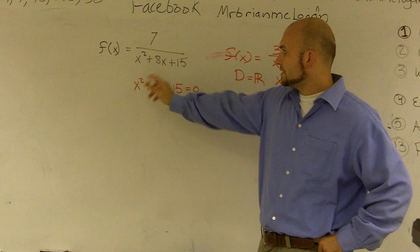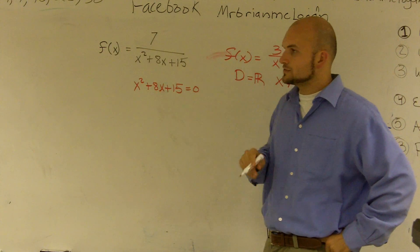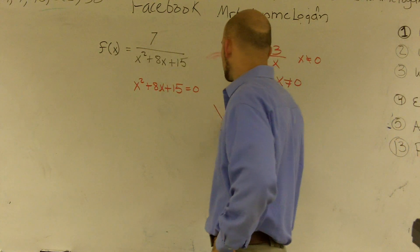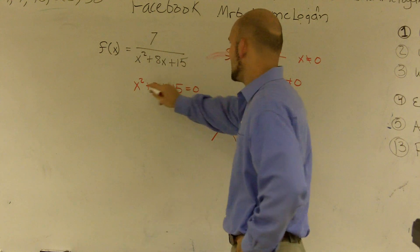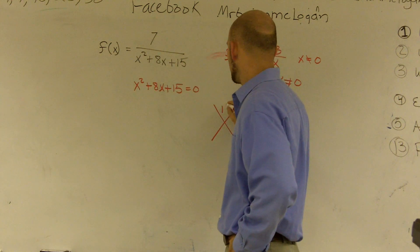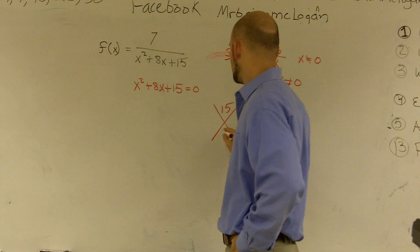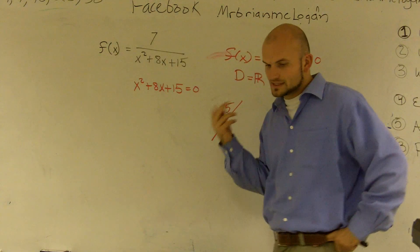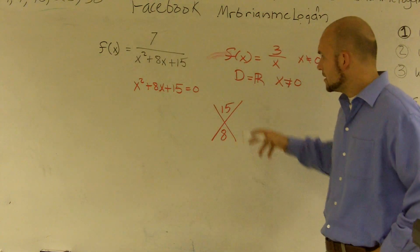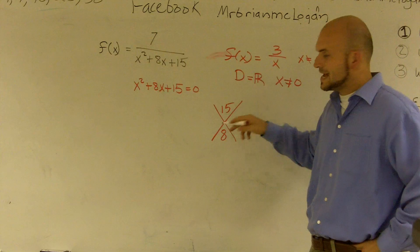Well, here my a is equal to 1, b is equal to 8, and c is equal to 15. So a lot of times what I'll do is I'll just take my a times c, which is 1 times 15, and I'll take my b, which is 8. And I'm just going to systematically think of what two numbers multiply to give me 15 but add to give me 8.